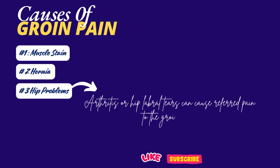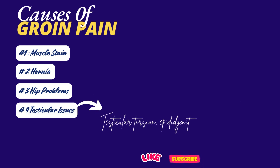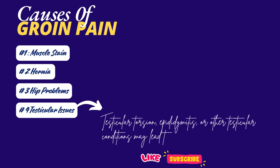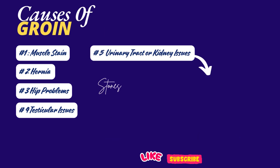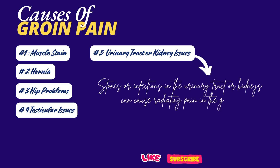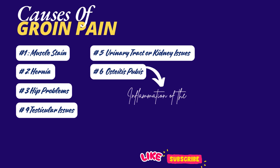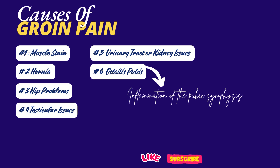This pain often comes with stiffness or reduced mobility in the hip joint. 4. Testicular issues. Testicular torsion, epididymitis, or other testicular conditions may lead to pain radiating to the groin, accompanied by swelling, tenderness, or pain in the scrotum. 5. Urinary tract or kidney issues — stones or infections can cause radiating pain in the groin. 6. Osteitis pubis — inflammation of the pubic symphysis, common in athletes due to repetitive stress on the pelvis, causing groin pain, often sharp or burning, particularly with movements.